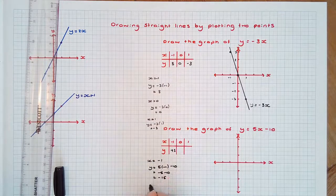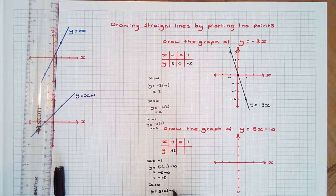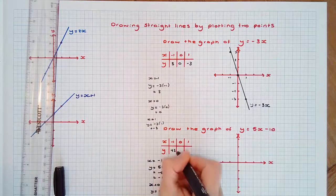When x equals 0, y equals 5 times 0 minus 10, which equals negative 10.